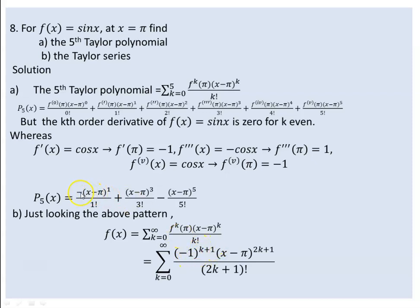This series is an alternating series — the signs go negative, positive, negative, positive. This alternating behavior is captured by (-1)^k or (-1)^(k+1) depending on the indexing.